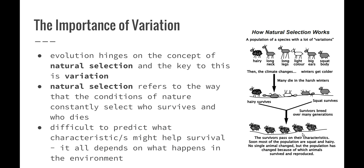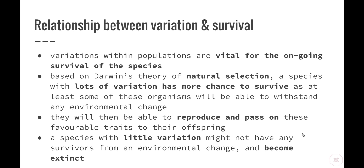So why is variation important? Evolution hinges on the concept of natural selection, and the key to natural selection is variation. Natural selection is the theory put forward by Charles Darwin and refers to the way that the conditions of nature constantly select who survives and who dies. Because we don't know what's going to happen in the future, it's difficult to predict what characteristics might help survival, as it all depends on what happens in the environment. A species with lots of variation has more chance to survive, as at least some organisms will withstand any environmental change, reproduce, and pass favourable traits to offspring, whereas a species with little variation might have no survivors and become extinct.